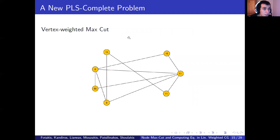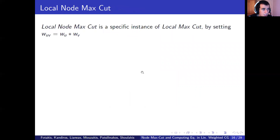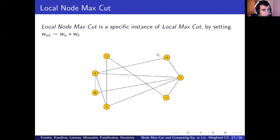To alleviate this, we define a new problem named node max-cut. Just as local max-cut denotes interaction between players via edge weights, we define local node max-cut to capture the weight of each player. In local node max-cut, we have a vertex-weighted rather than edge-weighted graph. Every player, or equivalently node, picks a side of the cut based on the total weight of its neighbors on each side. We can in fact equivalently consider this problem as a specific instance of local max-cut, by setting edge weights equal to the product of the weights of each endpoint vertex.